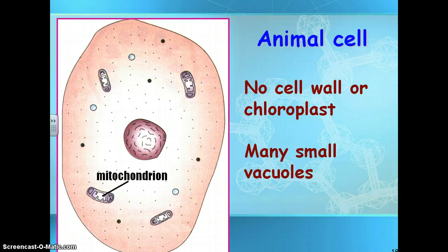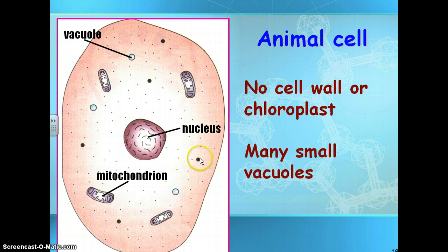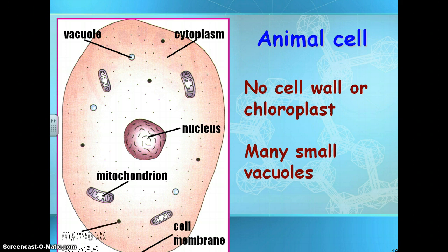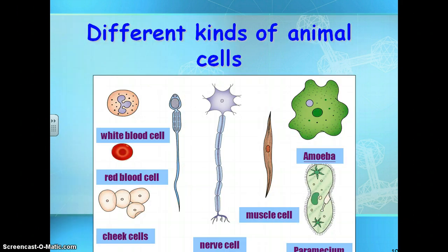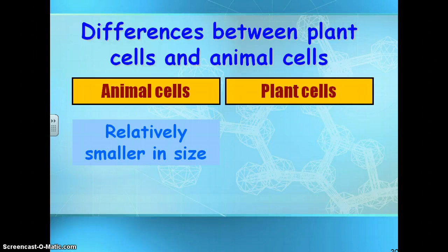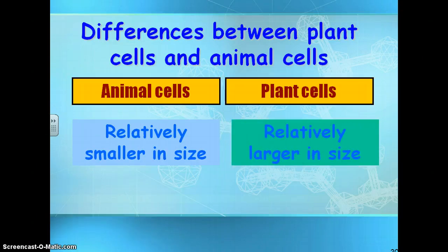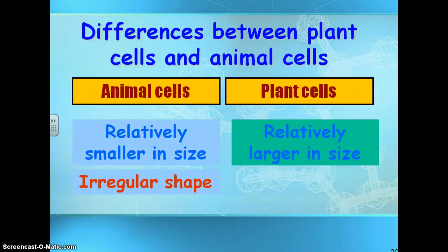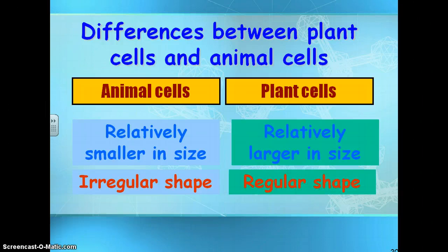In the animal cell, you can see the little mitochondria, the nucleus, and those little bitty blue dots — those are your vacuoles. You can also see different kinds of animal cells. Differences between plant and animal cells: animal cells are relatively smaller in size, whereas plant cells are typically larger. Animal cells have an irregular shape because they do not have a cell wall, while plant cells have a regular shape because they do have a cell wall.